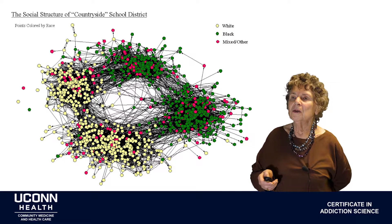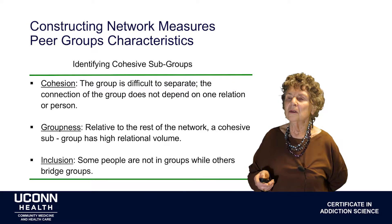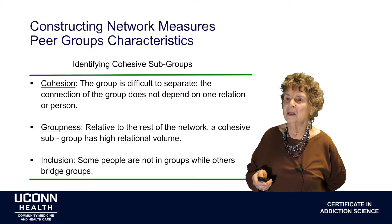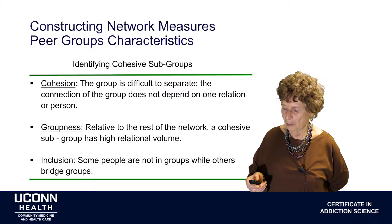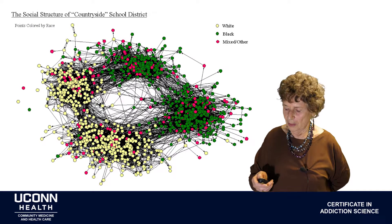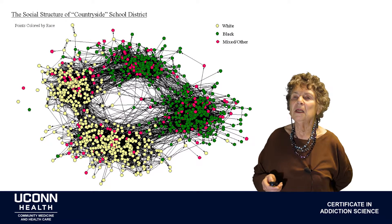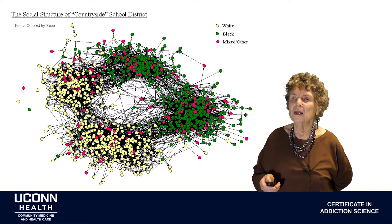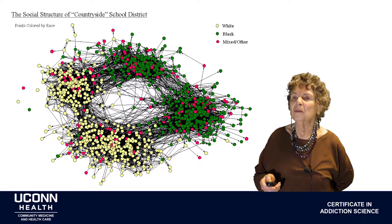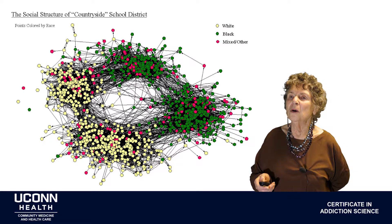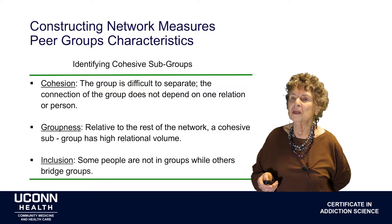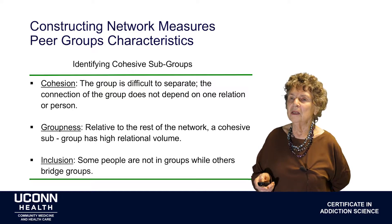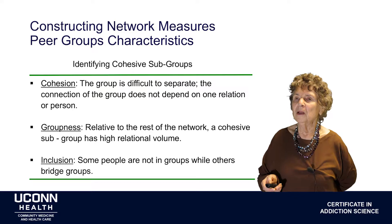We're interested in cohesion here — how cohesive is this network? It looks pretty cohesive. Is there groupness? Is there a cohesive subgroup? You can see four larger clusters of people connected together, linked by smaller numbers or in one case almost no members. And then inclusion: some people are not in groups while other people bridge groups. You can look at that slide and see if you can find bridge people and people who are excluded.